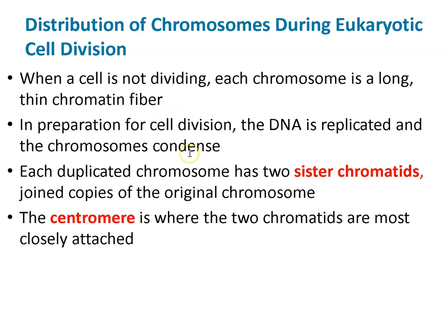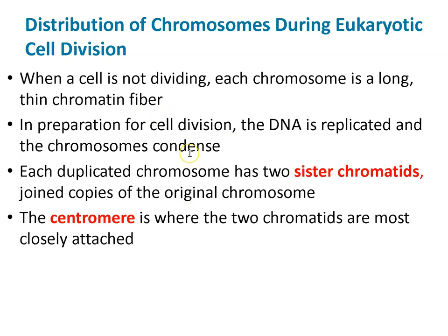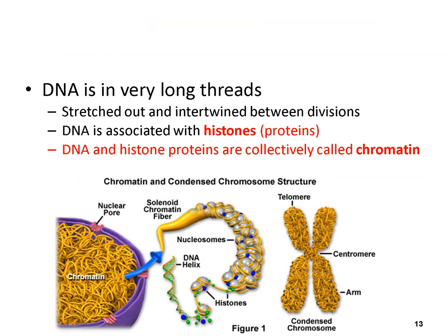Each duplicated chromosome has two sister chromatids. When a cell is not dividing, chromosomes are very thin and not coiled — just chromatin fiber. But when the cell is dividing, the chromosomes condense and form two sister chromatids. The centromere is where the two chromatids are most closely attached. Histones are proteins associated with DNA. DNA coils around these histones forming nucleosomes. DNA is negatively charged, and it folds around itself, eventually producing a really condensed chromosome, with the centromere right there holding the chromatids together. Chromatin condenses into distinctly visible chromosomes.